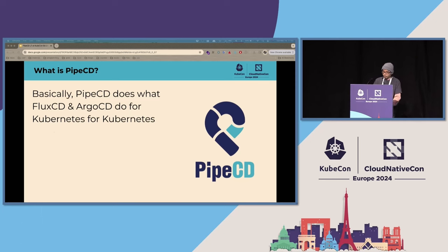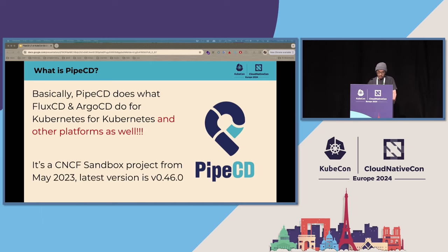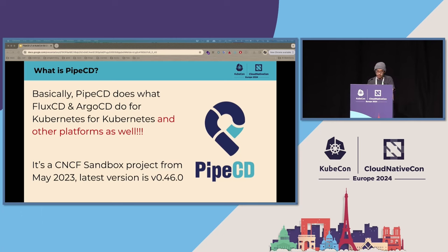For people new to PipeCD, basically PipeCD does what FluxCD and ArgoCD do for Kubernetes, and the good point is it's not just for Kubernetes — it's designed for other platforms as well. It's a GitOps-style continuous delivery platform that provides consistent deployment and operation experience for any application platform. It's a CNCF sandbox project from last year, and the latest release version is 0.46.